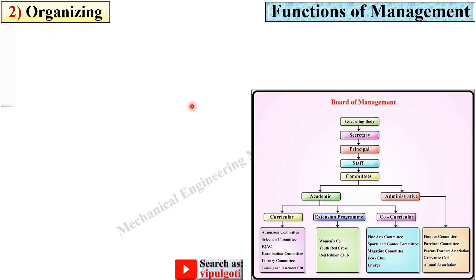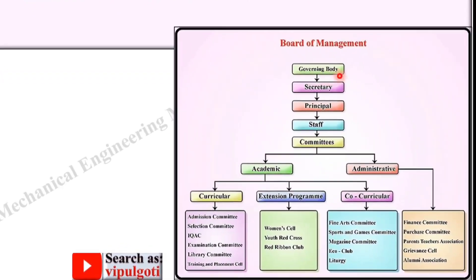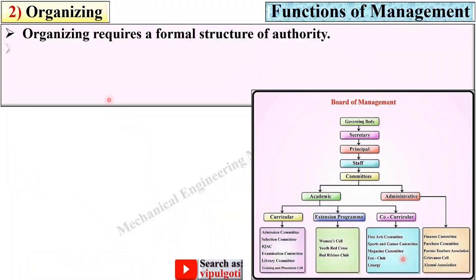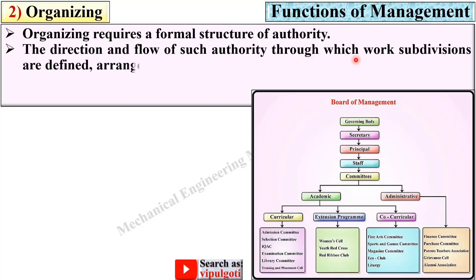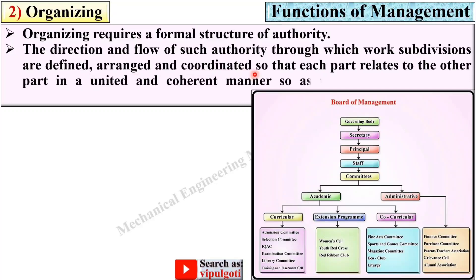The second function is organizing. Organizing requires a formal structure of authority. In this figure you can see the topmost is a governing body, then secretary, then principal, then staff, committees, and these are the lower-most parts of the pyramid structure. The direction and flow of such authority defines, arranges, and coordinates work subdivisions so that each part relates to the other in a united and coherent manner to attain the prescribed objectives.